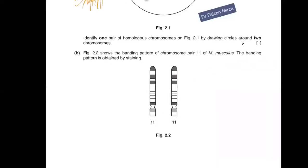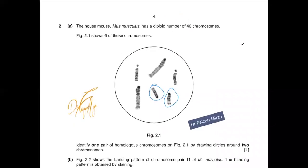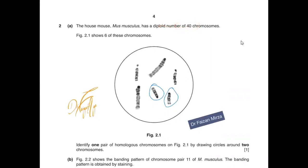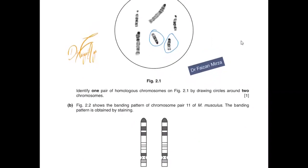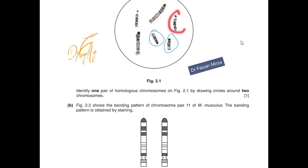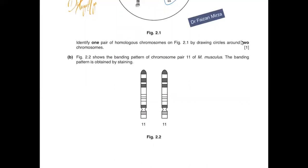Moving to a new question from October/November 2019, question 43, about homologous pairs. The house mouse has a diploid number of 40 chromosomes; figure 2.1 shows six of these chromosomes. You are asked to identify one pair of homologous chromosomes by drawing circles around two chromosomes. Homologous chromosomes must have a similar appearance and the same banding pattern.